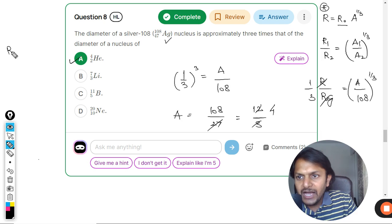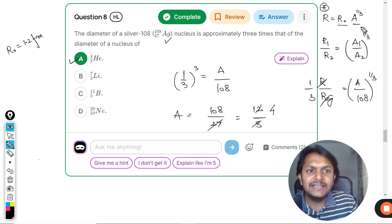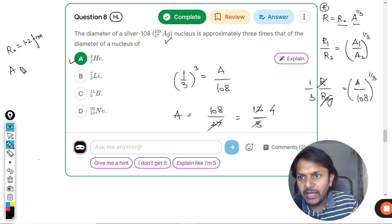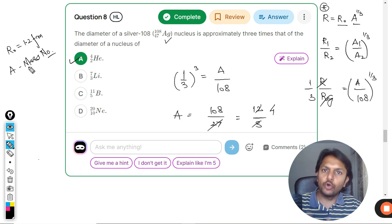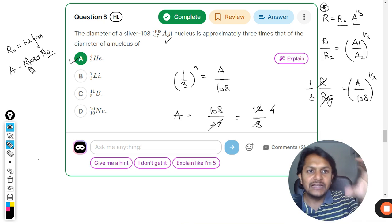R0 is a constant. R0 is 1.2 fermimeter. And A is the mass number, which is like the total number of protons and neutrons. That is A.